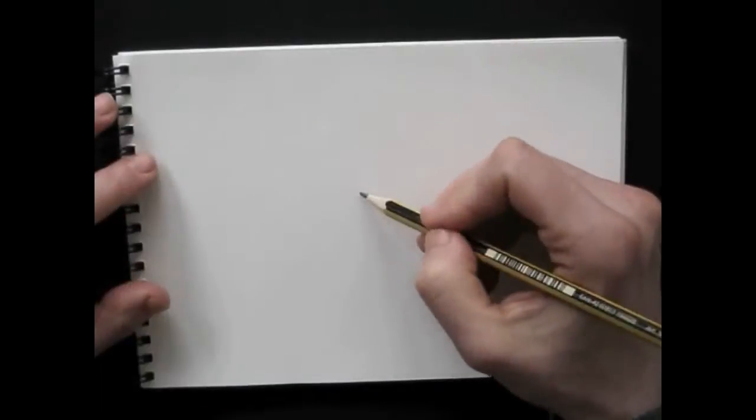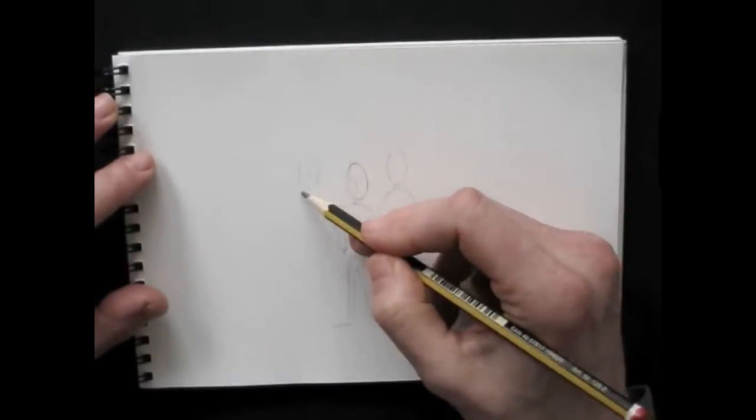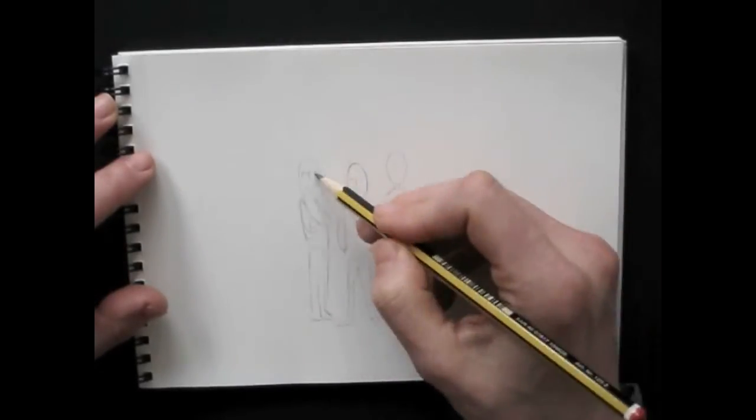I start by drawing the figures in pencil. For the heads I use simple egg shapes and fill those in with dots and lines for the eyes, nose and mouth.